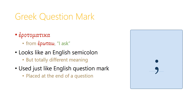The Greek question mark can be confusing for English speakers. In Greek it's called the 'erotomatica', from the verb 'erotao', which means 'I ask'. It looks like an English semicolon, but it's totally different in meaning — it's used just like the English question mark, placed at the end of a question. It's important to get used to this early on: what looks like an English semicolon is actually the question mark in Greek.